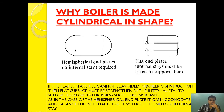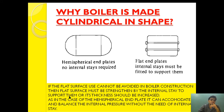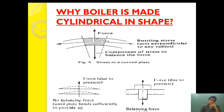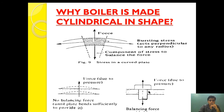The hemispherical end plate requires no internal stay, while the flat end plate requires an internal stay to support it. If a flat surface cannot be avoided in boiler construction, it must be strengthened by internal stays to support it, or its thickness would need to be increased. Our conclusion is that if we are not using a cylindrical surface, the flat surface must either have increased thickness or be supported with stays.